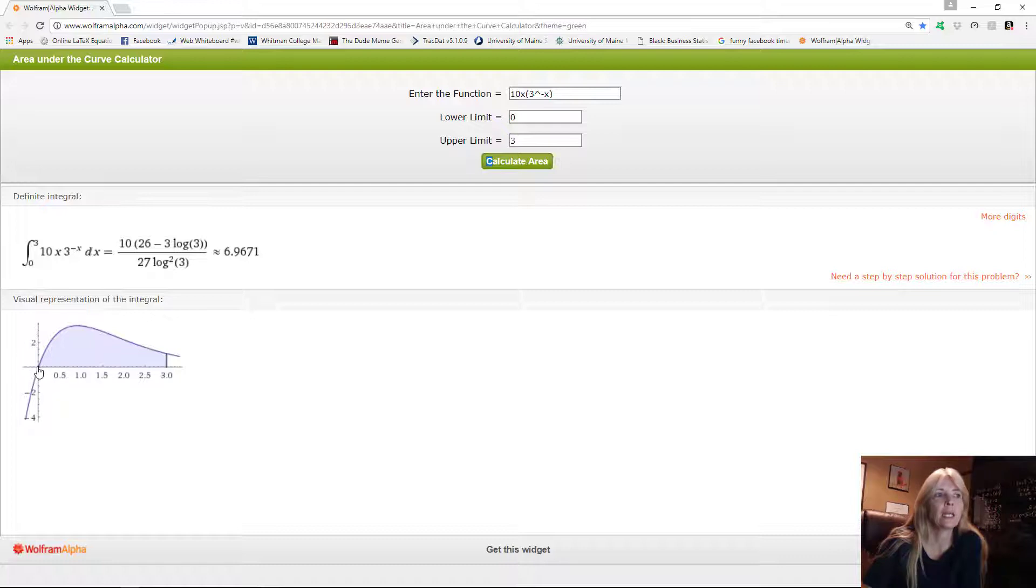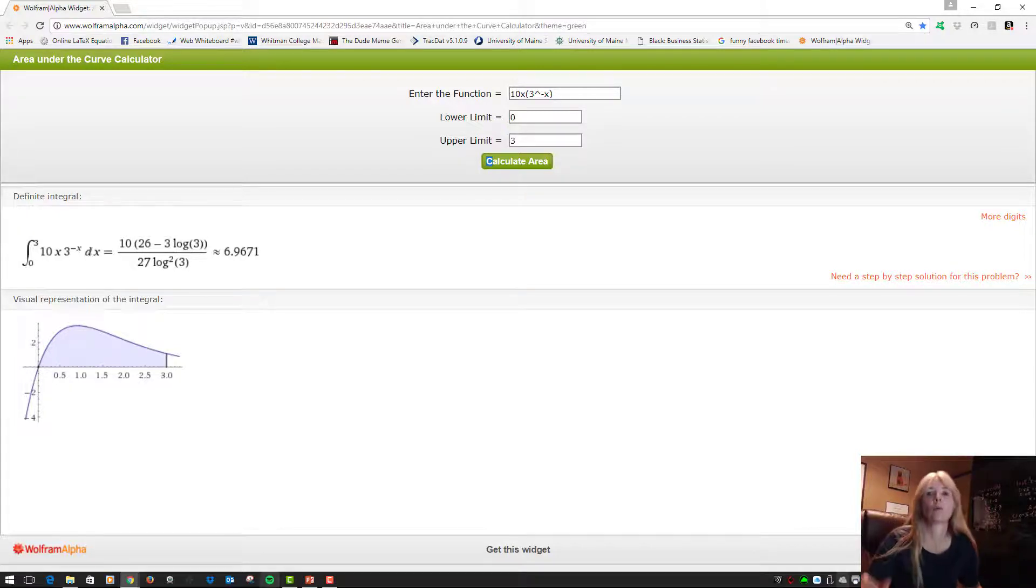And what this program does for you is it draws your graph and it gives you the area. So this 6.9671 is the area underneath this curve, which is underneath this derivative from 0 to 3. And that's your answer. And like I mentioned, in this section that's what they have you do—go use a calculator to do it. And then the next section we'll figure out, well, how did they actually come up with this stuff?